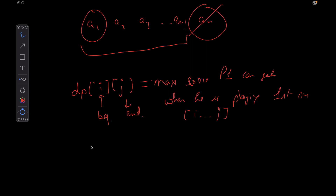Our final answer would be dp[0][n-1], since that represents the full initial array.